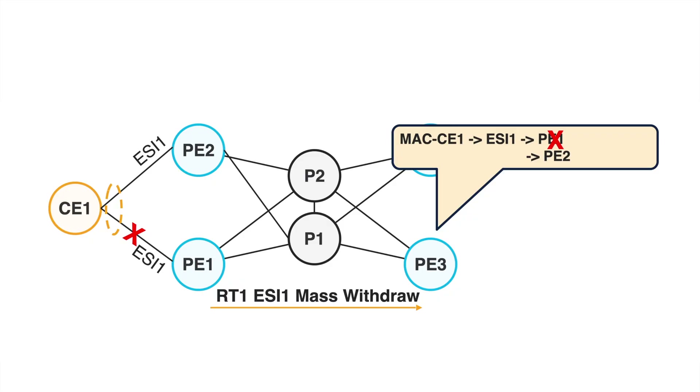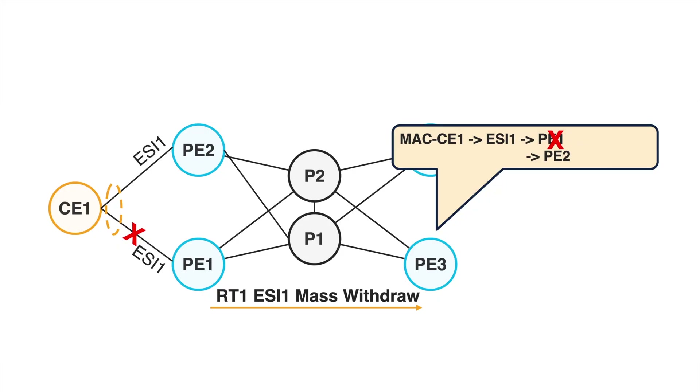Another very important feature from EVPN, which also speeds up convergence rapidly, is mass withdrawal. When PE3 is forwarding towards CE1, which is multi-homed to PE1 and PE2 over two links configured with Ethernet segment one, the forwarding chain on PE3 has the MAC address of CE1 pointing to this Ethernet segment behind PE1 and PE2. When the failure happens between CE1 and PE1, PE1 just does a withdrawal of route type 1 per ESI, telling remote nodes that this ESI is not behind PE1 anymore. With just this one update, PE3 can immediately redirect traffic directly to PE2.